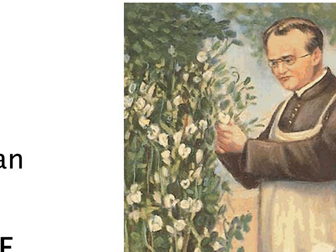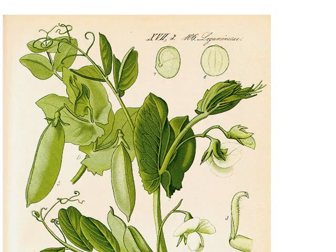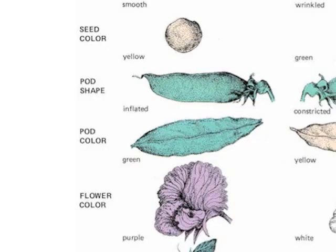Mendel's research reflected his personality, and he saw that the traits were inherited in certain numerical ratios, so his mathematician side came out. It still took seven years to cross and score the plants to the thousands to prove the laws of inheritance. The plant he focused on was the common garden pea, which is Pisum sativum, and the garden pea had a lot of advantages.